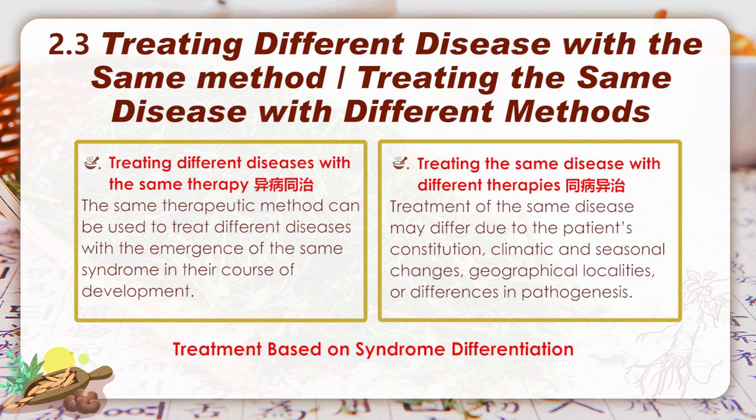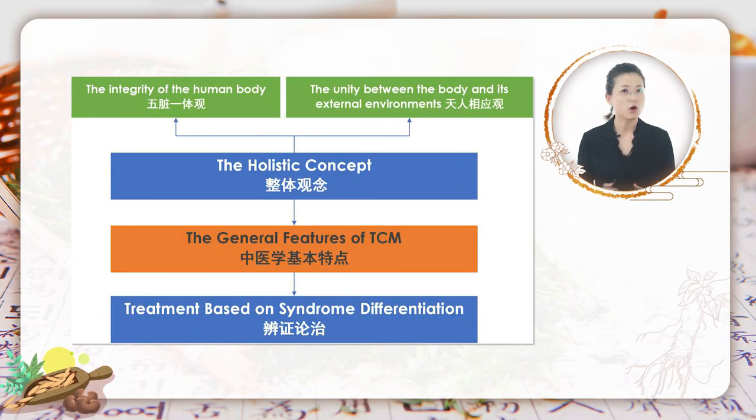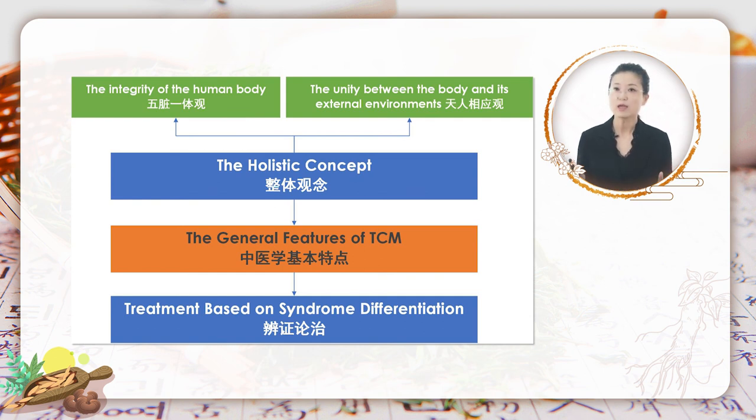Let's make a conclusion on what we have learned about the fundamental features of TCM: the holistic concept, which includes the integrity of the human body and the unity between the body and external environments, and treatment based on syndrome differentiation. Thank you for watching and I will see you next time.